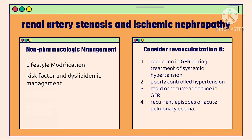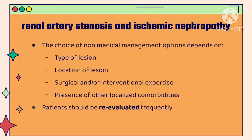Revascularization should be considered if there is progressive and unexplained reduction in GFR during treatment, poorly controlled hypertension, rapid or recurrent decline in glomerular filtration rate, or recurrent episodes of acute unexplained pulmonary edema. The choice of non-medical management depends on: the type of lesion — atherosclerotic or fibromuscular; the location — osteal versus non-osteal; localized surgical or interventional expertise; and the presence of comorbidities such as aortic aneurysm or severe aortoiliac disease.